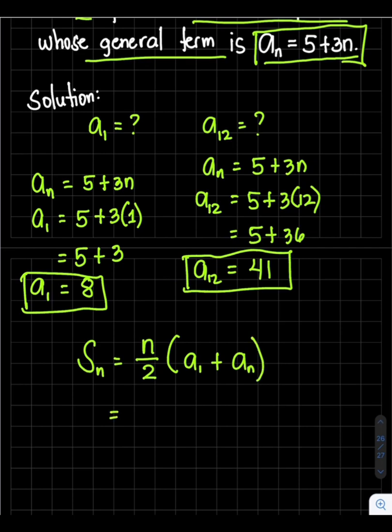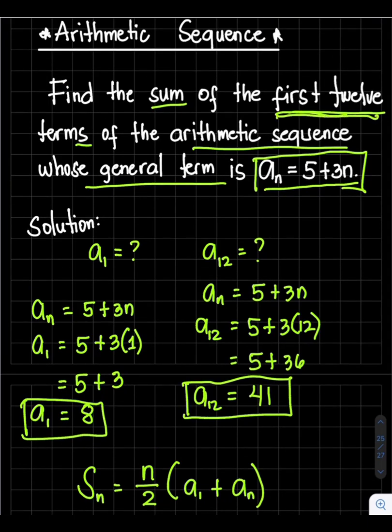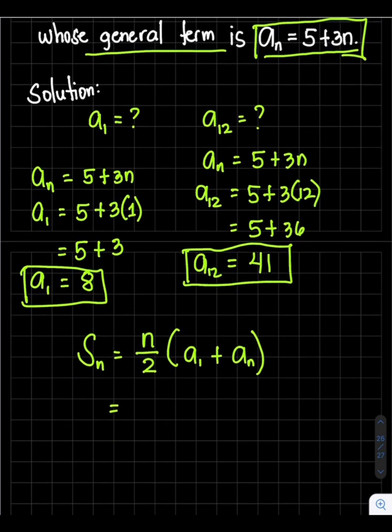So our n is 12. Since we're finding the first 12 terms, the value of n is 12. So we have (12/2) times (a_1 + a_12), which is (12/2) times (8 + 41).